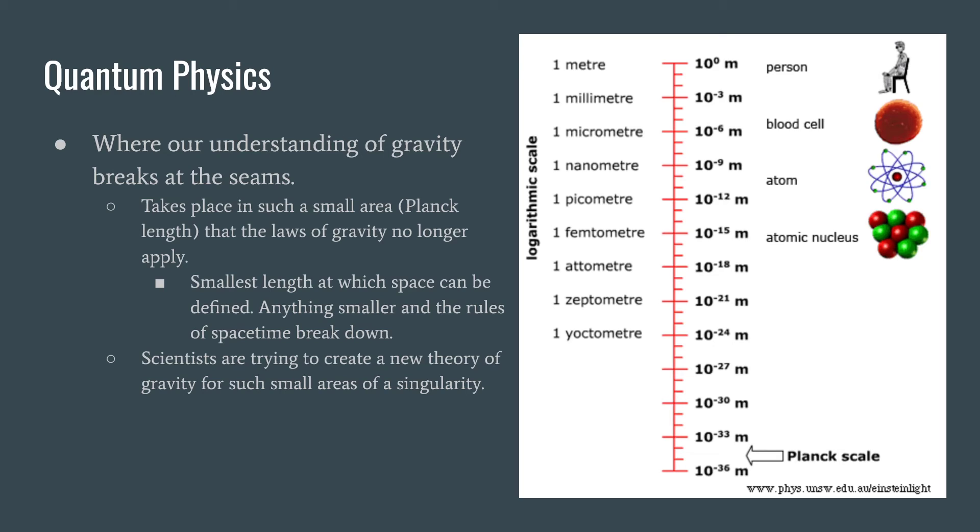So now we're going to talk a little bit about quantum physics, and this is where our understanding of gravity breaks at the seams. So Einstein's theory is just in general the most accepted because it has been the most accurate. But when we are talking about something so small, which is dubbed the Planck scale, which you can see on the right here, like the size of a person, a blood cell atom, atomic nucleus, and then Planck scale is way down there. It is the smallest measurable length before space-time itself starts to break down. It is the singularity point of a black hole. And Einstein didn't even believe that black holes could exist. So how could he have possibly thought that a point so small within a black hole could even exist? He couldn't have imagined it whatsoever.